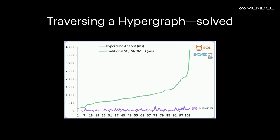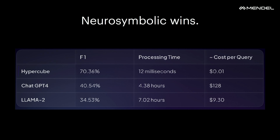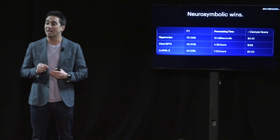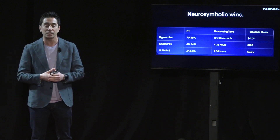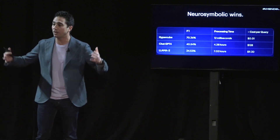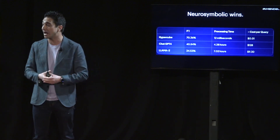There were three things we had to do: build a generative ontology, construct a hypergraph from it, and figure out how to traverse it efficiently. The end result — as shown in a paper we just published — is that if you take 100 clinical trials and query a database of 1,000 patients to find the right patient for the right trial, our system Hypercube performs significantly better than ChatGPT-4 or LLM2. More importantly, a query that would take four hours on a RAG architecture takes 12 milliseconds with the Mendel architecture. And a query costing around $128 in API calls would cost around one cent, because you're querying the hypergraph in a computationally efficient way rather than a vector database.